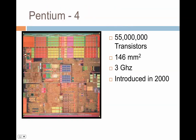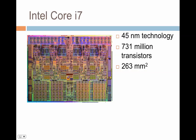Looking at specific processor examples: the Pentium 4 had around 55 million transistors with a die size of around 146 mm², running at around 3 GHz, introduced in 2000. As we scale to the Intel Core i7 in 45 nanometers, we can integrate 731 million transistors with a die size of roughly 263 mm².